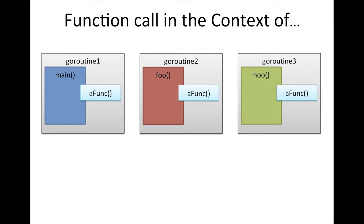It doesn't matter what the other goroutines are doing. The important thing here to realize is that aFunc is being called three times. So the way you want to think of that is that inside of goroutine1, which is running main, main calls aFunc.